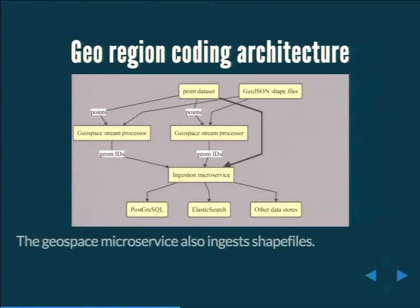Here's an architecture diagram of what we call georegion coding. At the top, we start with a point dataset. As points are streamed in, they go into a microservice we call GeoSpace, which is a stream processor. It does an in-memory join with regions loaded from GeoJSON. This converts points into geometry IDs — which could correspond to a zip code — and these get ingested into multiple backends: Elasticsearch, Postgres, and others.